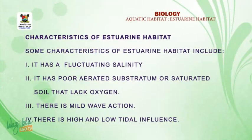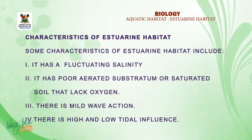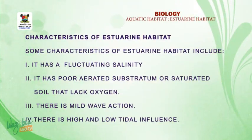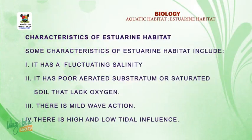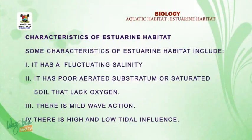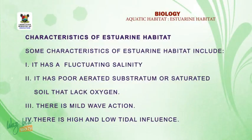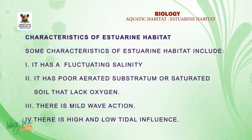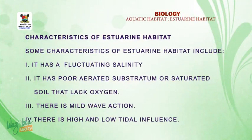Now let's look at the characteristics of estuarine habitats. Some characteristics include: one, it has a fluctuating salinity because the salinity of the estuary depends on tidal action and the season; two, it has poorly aerated or waterlogged soil that lacks oxygen; three, there is mild wave action; four, there is high and low tidal influence.